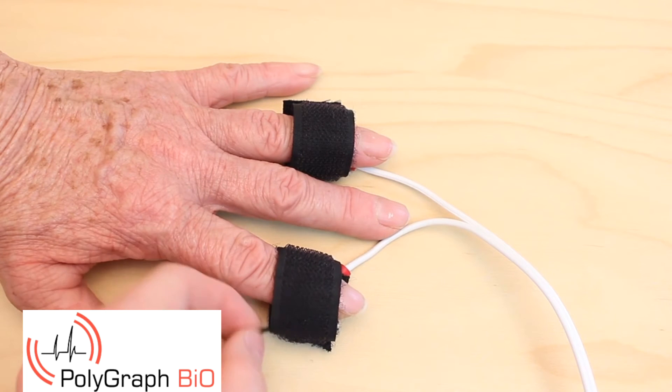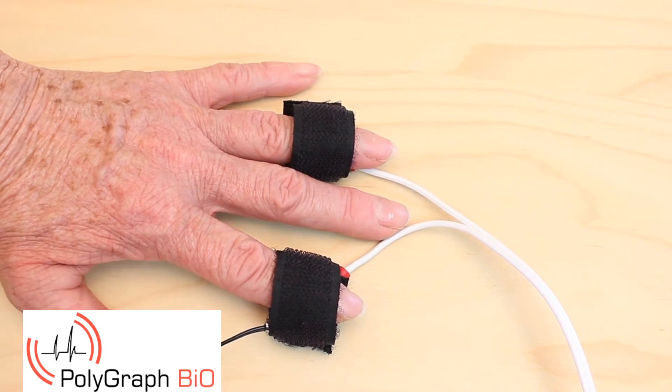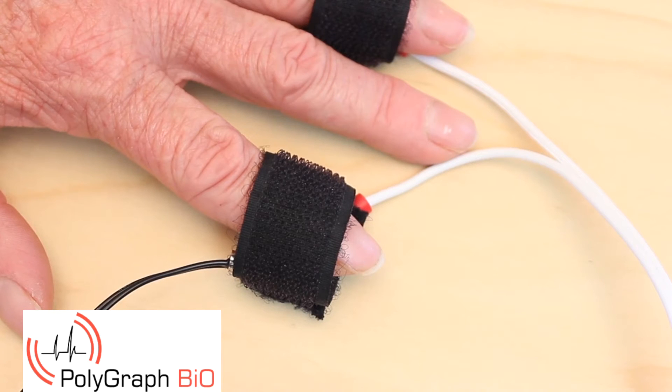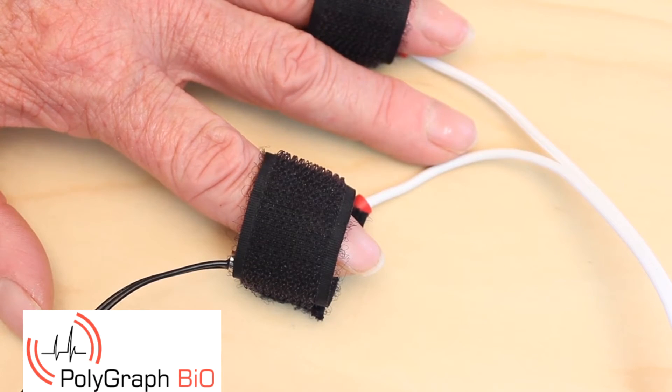Last but not least, attach the thermometer probe on the test subject's pointing finger in between the skin-resistant measuring electrodes. With this, the polygraph is able to tell when the body temperature of the test subject changes.